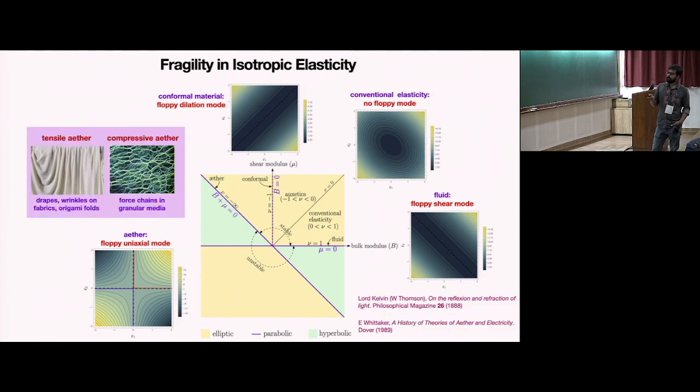This material called ether was first proposed as the mechanical theory of light by Lord Kelvin, and its history is discussed in this nice book. I'll give two examples for this interesting material. One example is from ordinary fabrics. Fabrics can wrinkle and have drapes. These fabrics are soft under uniaxial compression and support only uniaxial tension, so these are tensile ethers. Similarly, a dual of this tensile ether is the compressive ether, so-called granular media. The material structure can only support compressive load, not tensile loads. So you have these two ethers - these materials basically operate on the stability thresholds.